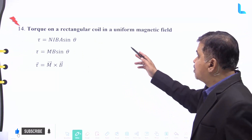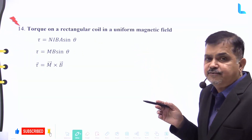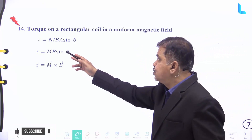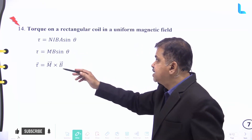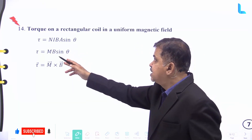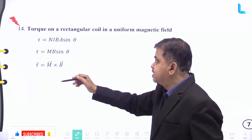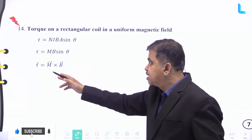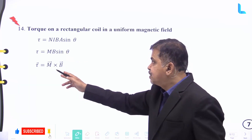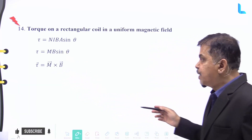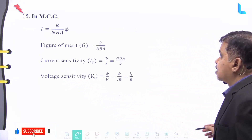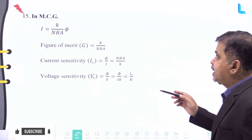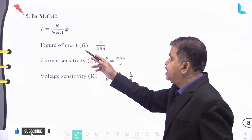The torque on a rectangular coil in a uniform magnetic field is given by torque equals n times i times B times A times sine theta. This is further equal to M times B sine theta, and in vector form, torque equals vector M cross vector B.